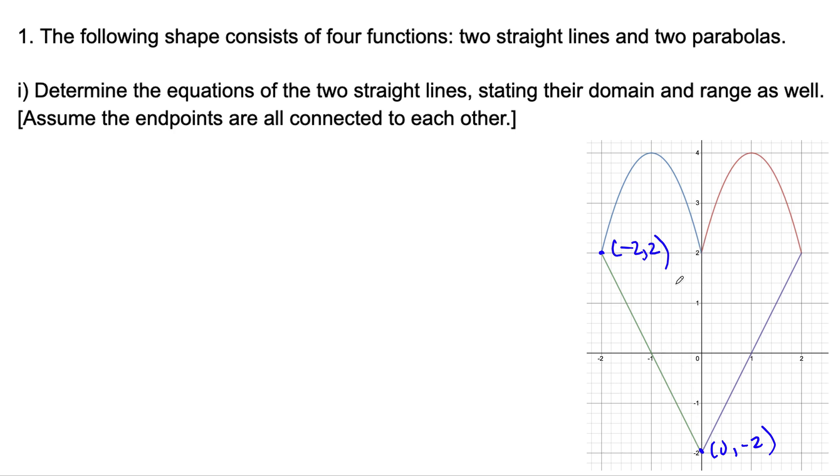Another thing we could do instead of looking at these two points, we could just take this one right here and start at the bottom and say we rise 2 and we run -1. Therefore, the slope of this line is rise over run, which is 2 over -1, or simply put just -2.